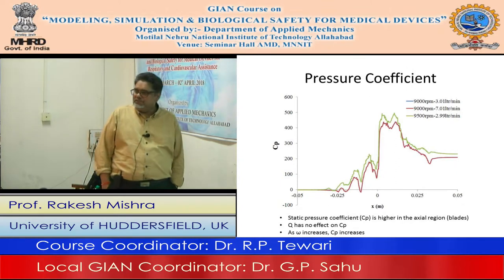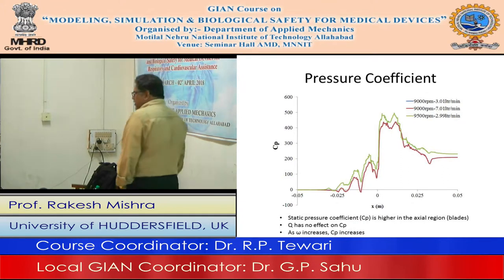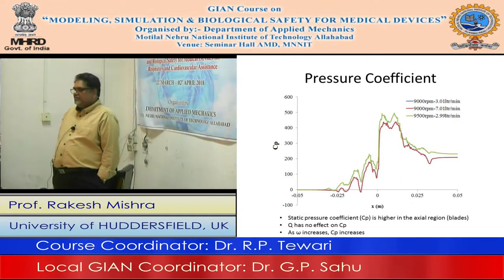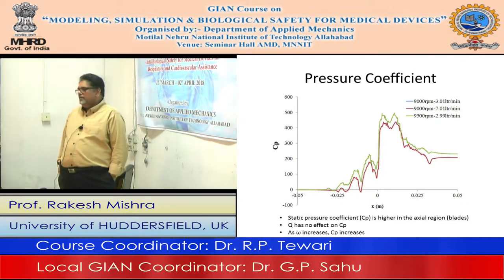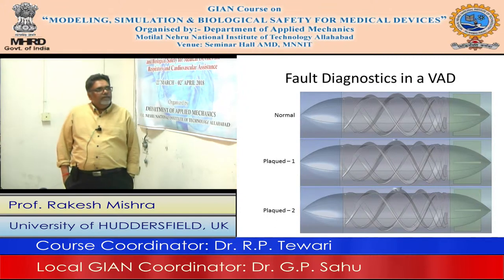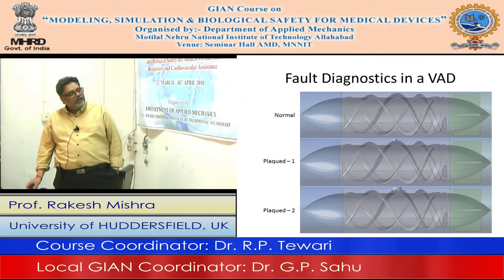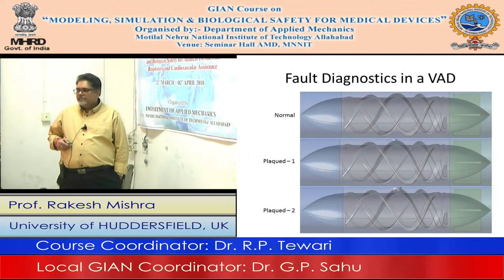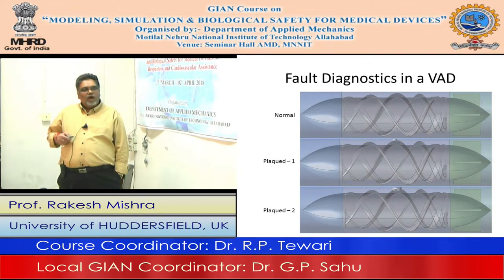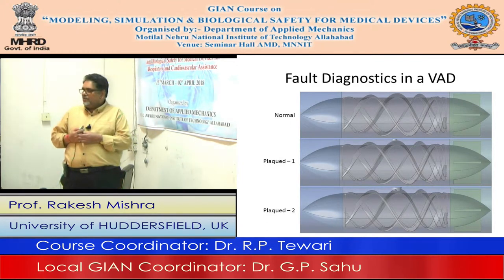Now we start diagnostics in VAD — what happens if a fault appears in the ventricular assist device. Suppose thrombosis has taken place: how will performance be affected, how can we monitor it, and how can we quantify that performance? The top device is the normal one. One device has a small spherical clot formation and another device has a bigger clot formation. I am going to simulate flow at the same conditions and see how the pressure and velocity values change.